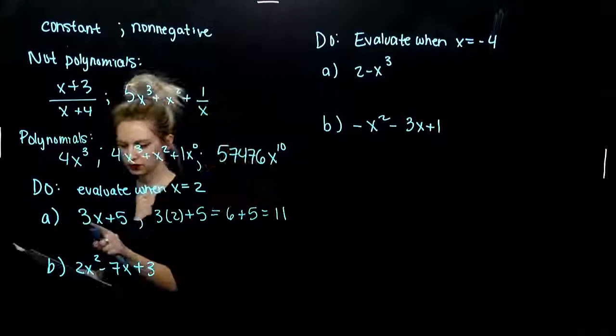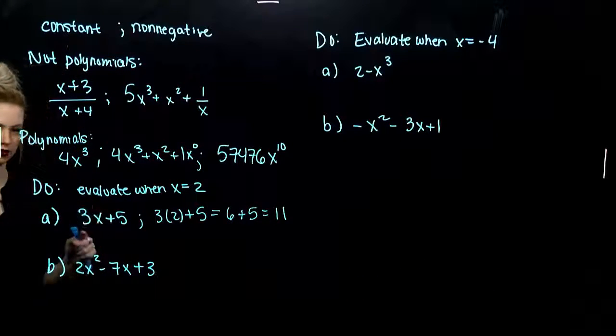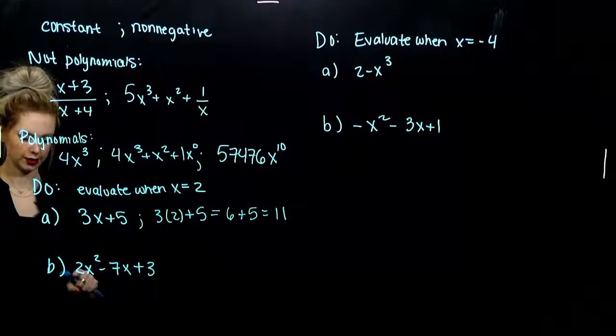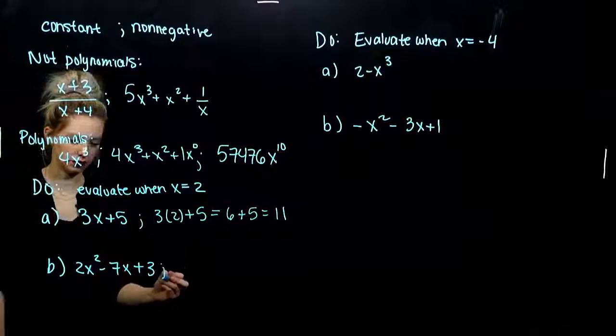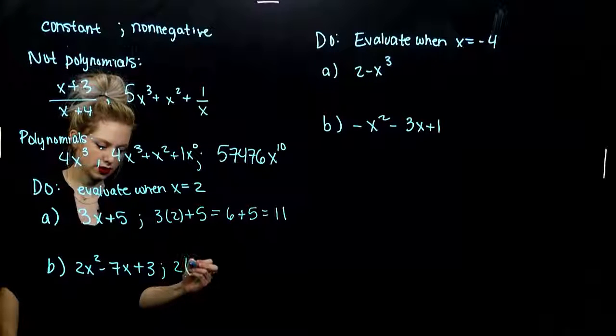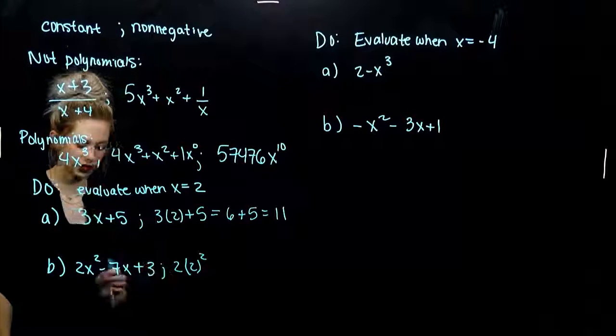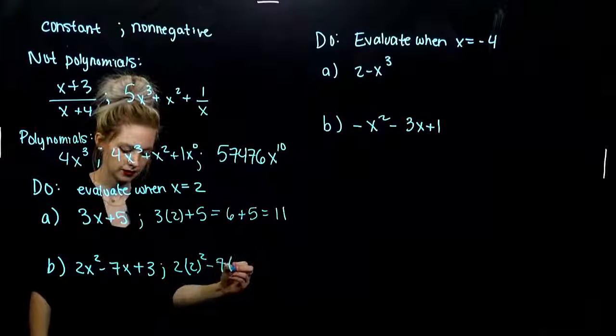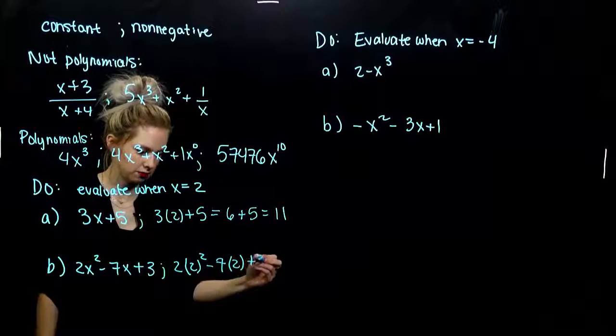The second one, we've dealt a lot with these cases. These are all linear. It's a line. But, now something that's not linear. At 2, what are we doing? I've got 2 times 2 squared. Wherever I see an x, put parentheses around it so we don't make mistakes. 7 times 2, and I'm adding 3 on the back.